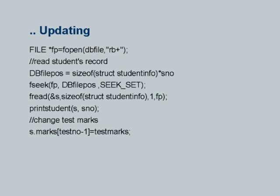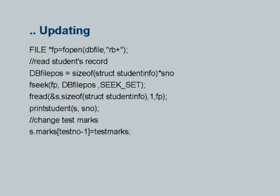I will use the print command to print that student's record. Now I will change the marks of that student — I have read the record from the file; it is in my memory. Structure S contains the record of that student. To change the test mark: suppose I am giving marks for the second test — since the test array has 5 elements, the second test is represented by index 1. That is why I subtract 1 from the test number and use it as an index to update the marks. So S.marks[test_number - 1] equals test_marks.